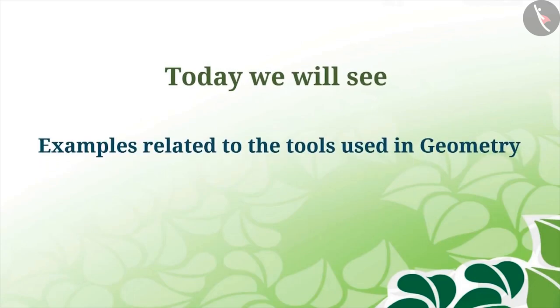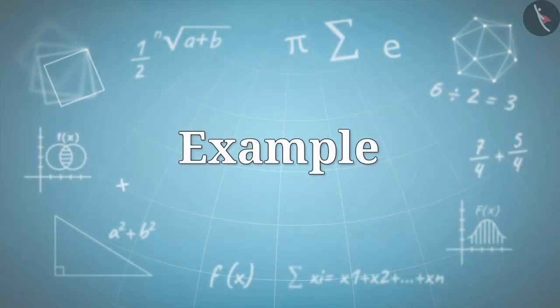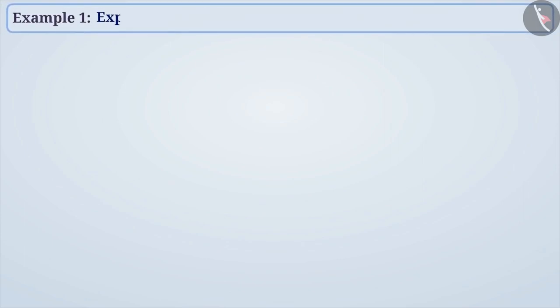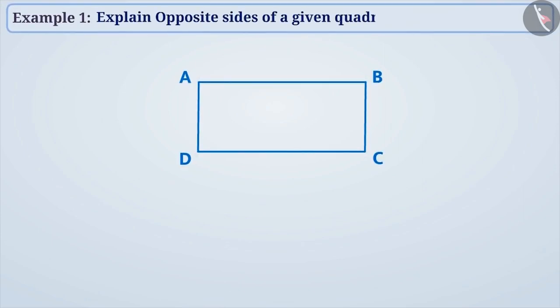Today, we will see some examples related to the tools used in geometry. Example 1: Explain opposite sides of a given quadrilateral are equal.